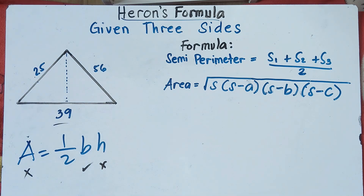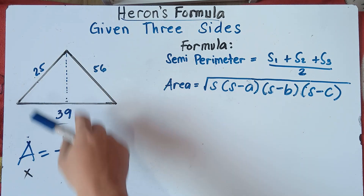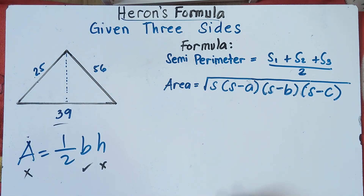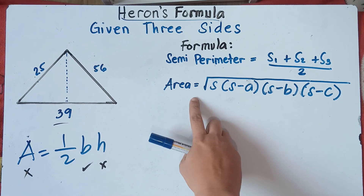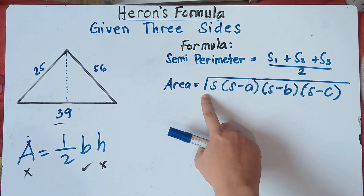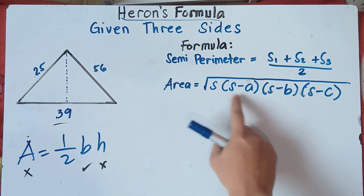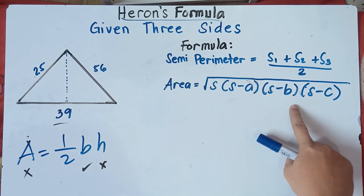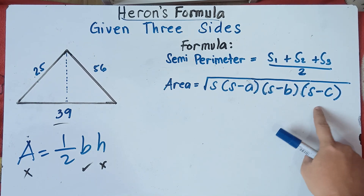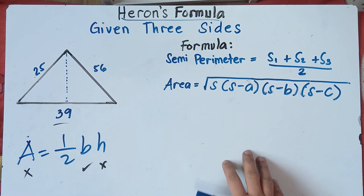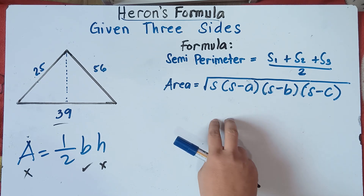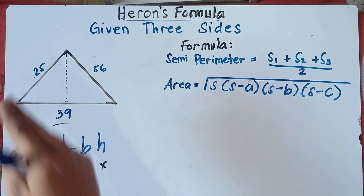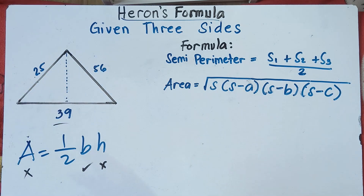So what is the formula? To find the area of the triangle, the formula is: Area equals the square root of S, times quantity (S minus A), times quantity (S minus B), times quantity (S minus C). This is the formula we need to use in finding the area of the triangle if the height is not given and the given are only the three sides.